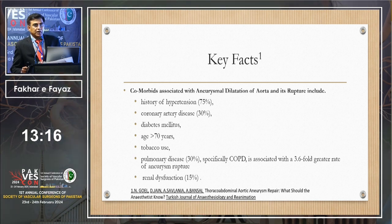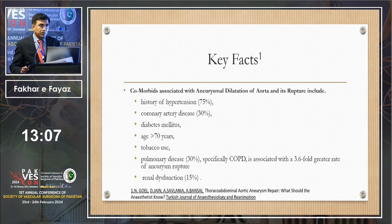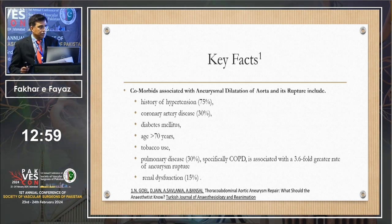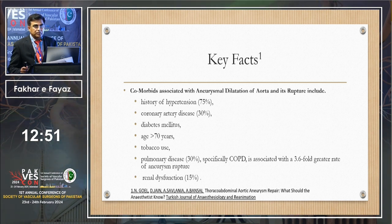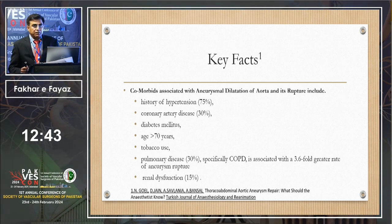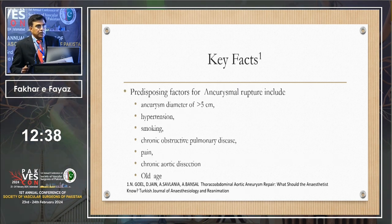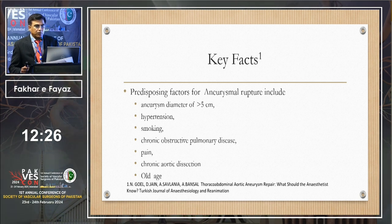Renal function is associated in around 15% of patients. Predisposing factors for aneurysmal rupture include: aneurysmal diameter more than 5 cm, hypertension, smoking, COPD, continuous pain, chronic dissection, and old age. The three classifications that anesthetists must know: DeBakey and Stanford for dissections, and Crawford for aneurysms. Stanford: type A involves the ascending aorta, type B does not. DeBakey is based on the location of the intimal tear. Crawford classification was devised in 1984 for descending thoracic and thoracoabdominal aortic aneurysms.